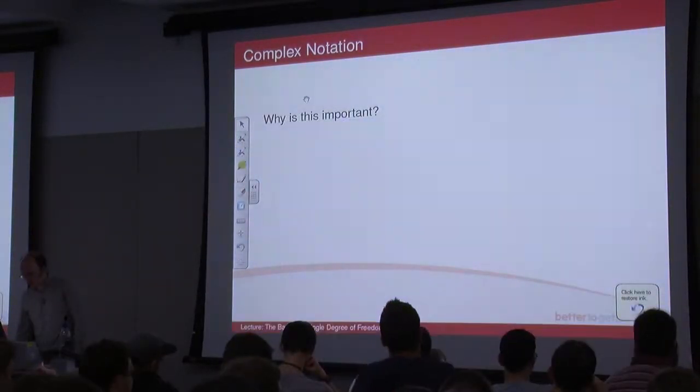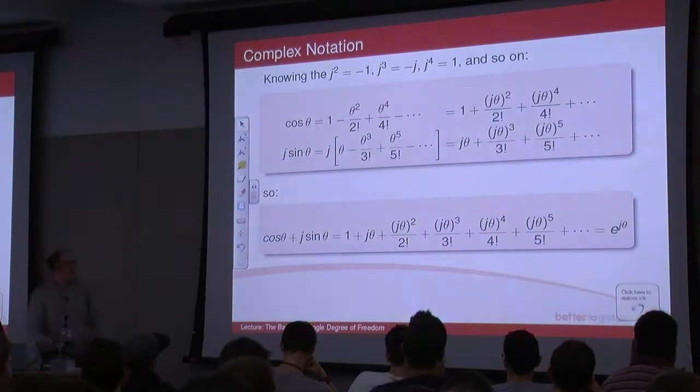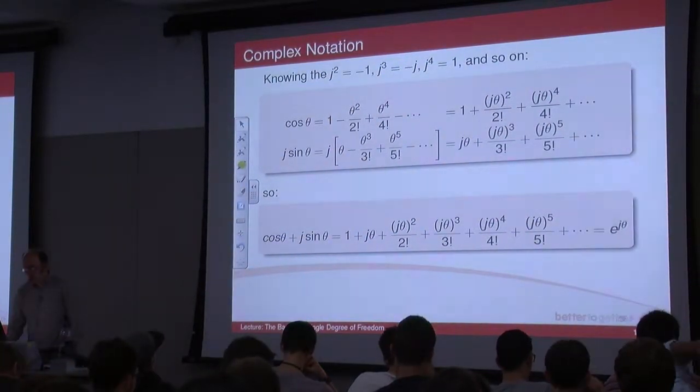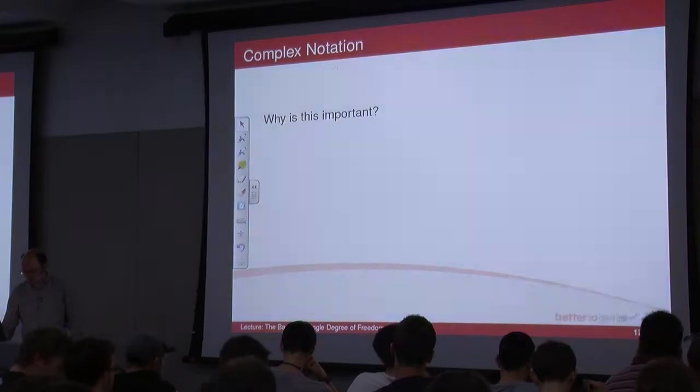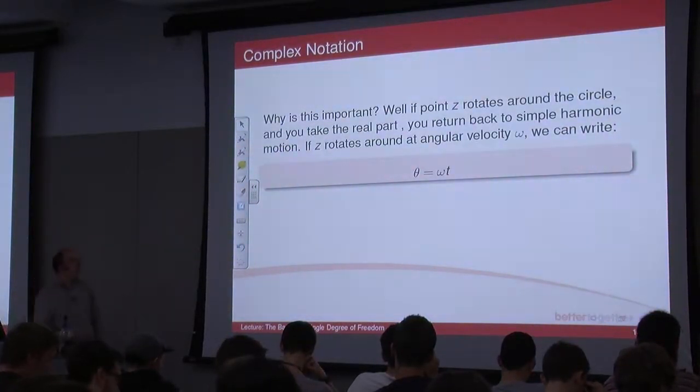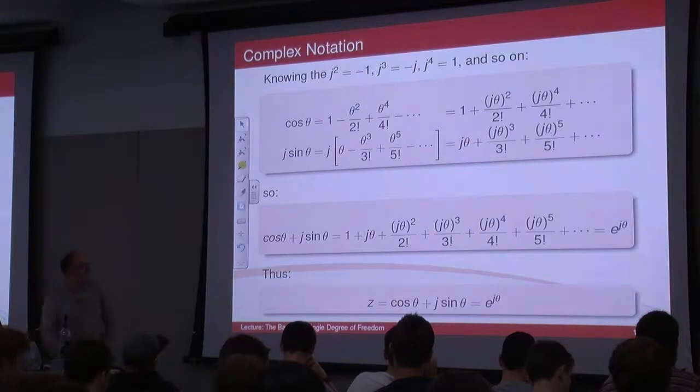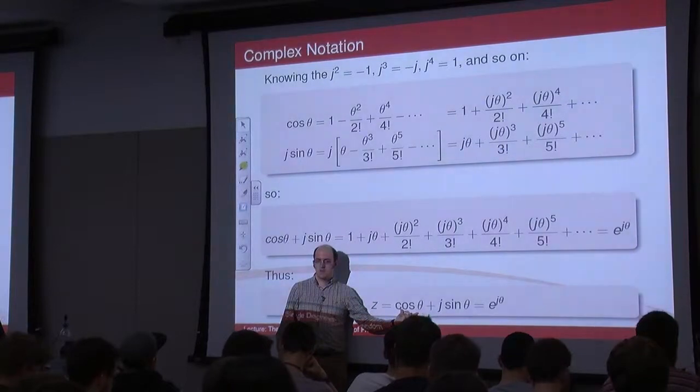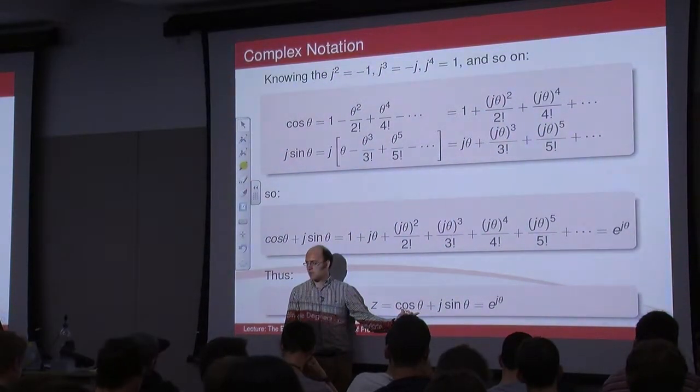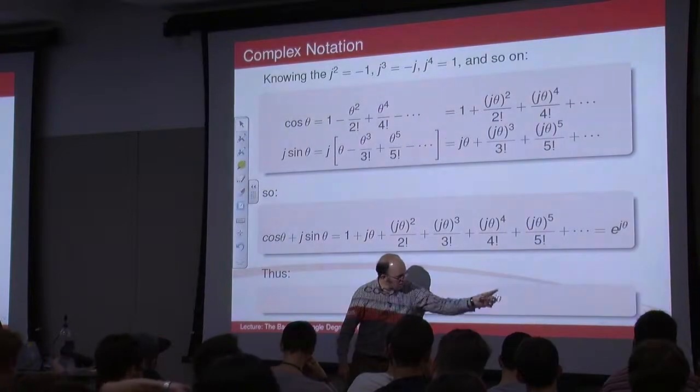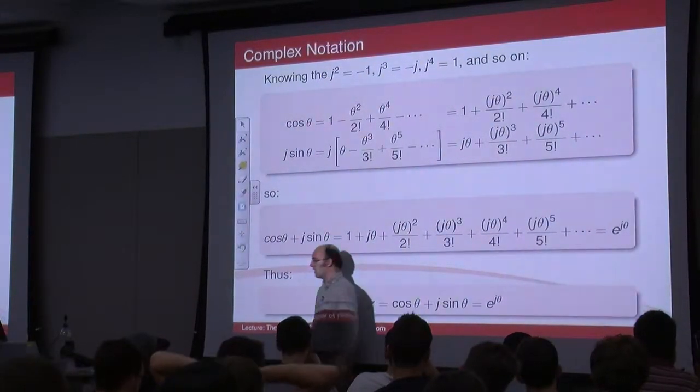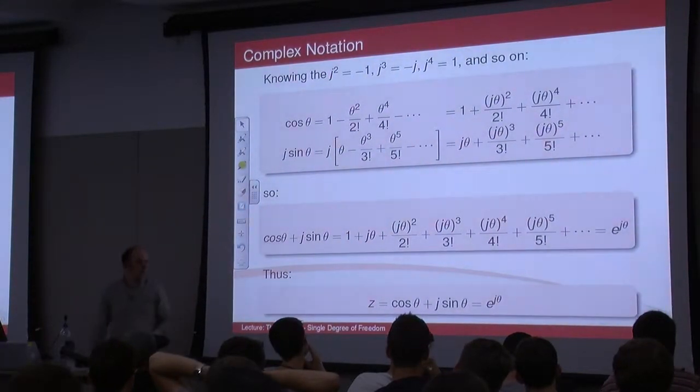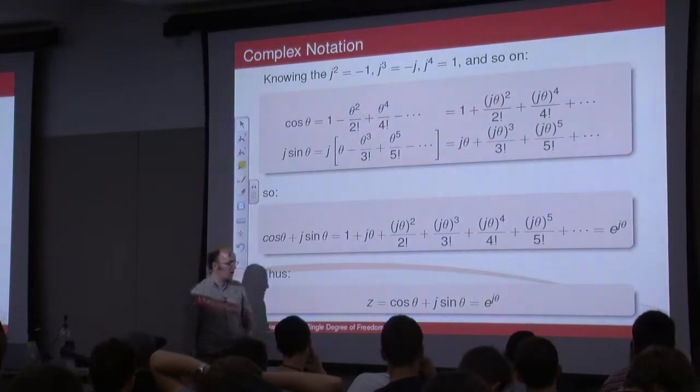Why is it important? So like I said, e to the j theta is cosine theta plus j sine theta. So we can use complex notation, and the reason that is, is that basically it's important, if you take the real part of a complex number, you end up with cosine of theta. And what's cosine of theta? It's a sinusoid, and what's a sinusoid? It's an oscillation. So if you have a complex number that looks like that, with the j in the exponential bit, the real part of that complex number will be an oscillation.